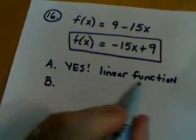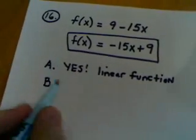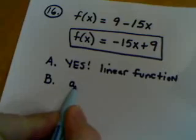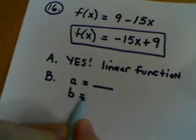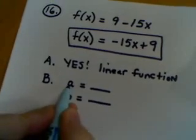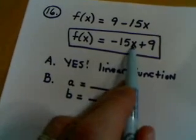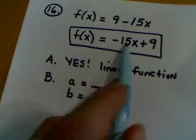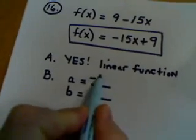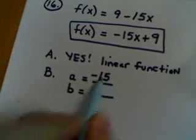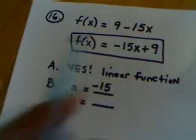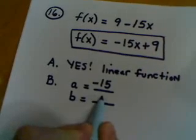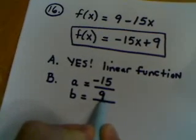Part B, what you're asked to do once you determine a function is linear, is you're asked to determine what little a is equal to and what little b is equal to. Little a represents the coefficient in front of the x, and in this particular case, that would be the real number negative 15. And little b represents the number in back, which is sometimes called the constant, and in this particular case, that's a positive 9.